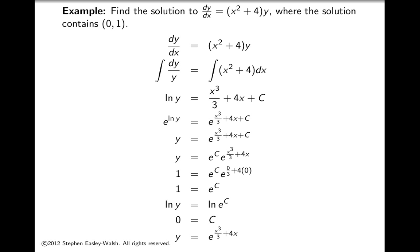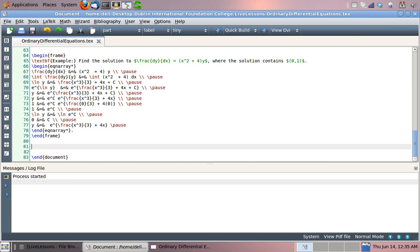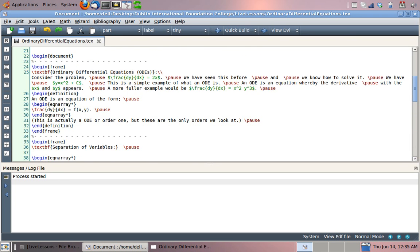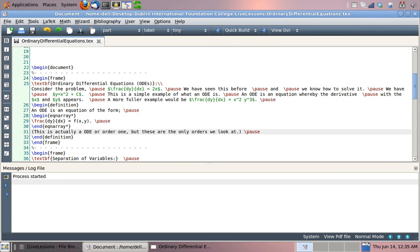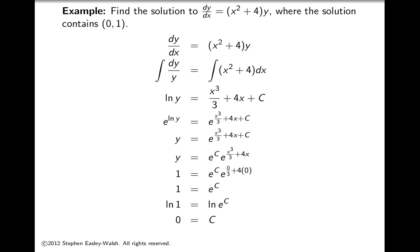So let me just fix that mistake there. That should have said log 1. Okay, let's go back down now. We have 1 equals e^C, and like I said, log of both sides, so log 1 equals log e^C. And log 1 is 0, and the log and the e cancel, so I'm just left with C. So I get C is 0, and I put that back in, and I have y equals e to the power of (x cubed over 3 plus 4x).